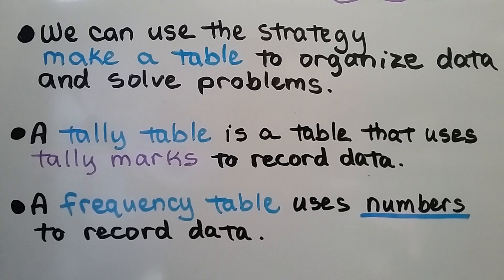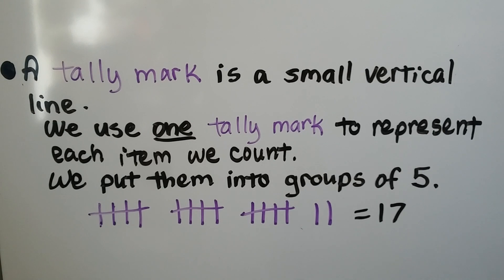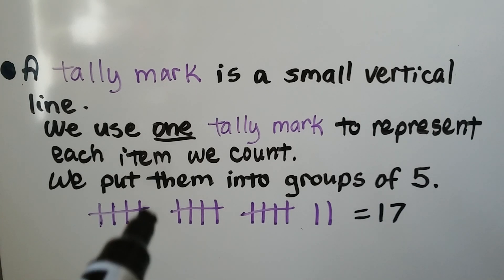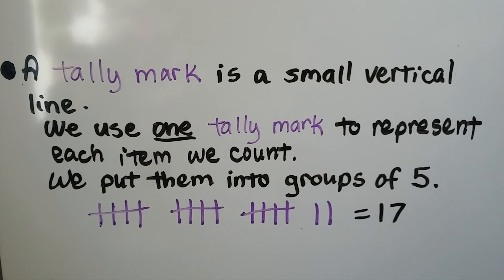A tally table is a table that uses tally marks to record data. A frequency table uses numbers to record data. A tally mark is a small vertical line. We use one tally mark to represent each item we count, and we put them into groups of five. When we make four tally marks, we cross them with a fifth one.